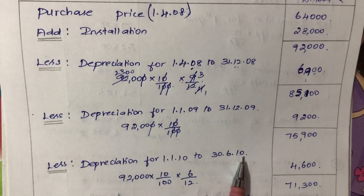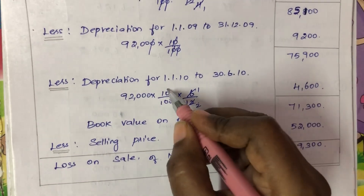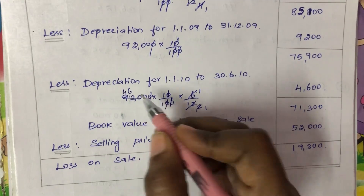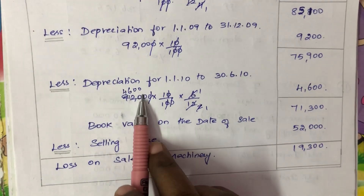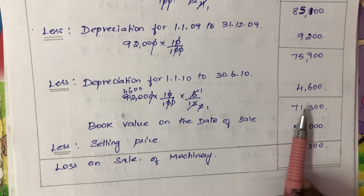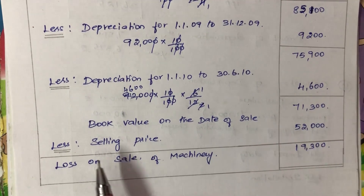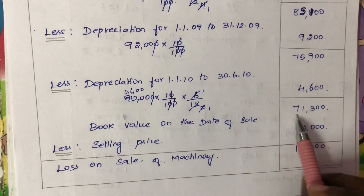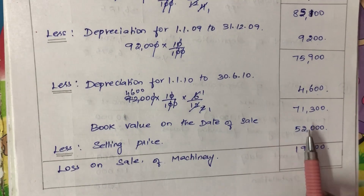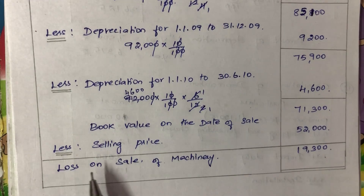Less depreciation for 1st January 2010 to 30th June 2010. The machinery was sold in June, so it was used from January to June — 6 months. Rs. 92,000 into 10 by 100 into 6 by 12 equals Rs. 4,600. Rs. 75,900 minus Rs. 4,600 equals Rs. 71,300, which is the book value on the date of sale. Since the machinery sold for Rs. 52,000, the loss on sale is Rs. 71,300 minus Rs. 52,000 equals Rs. 19,300.